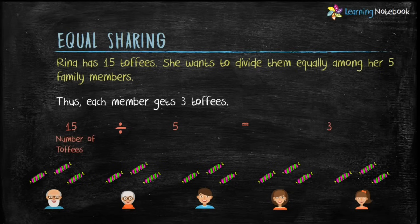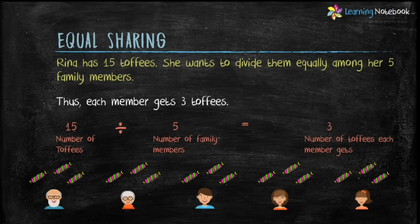Students, what is 15? 15 is the total number of toffees. 5 is the total number of family members and 3 is the number of toffees each member gets. This is called equal sharing.